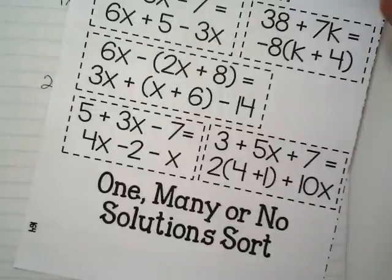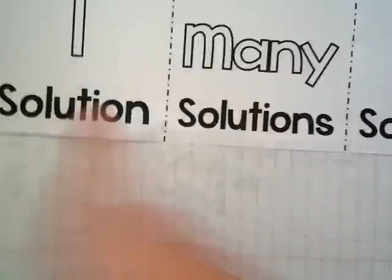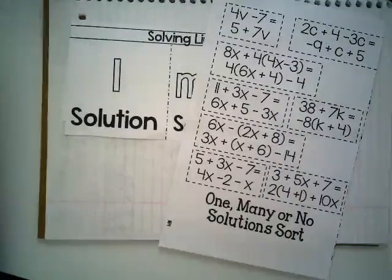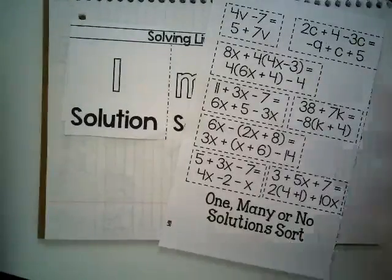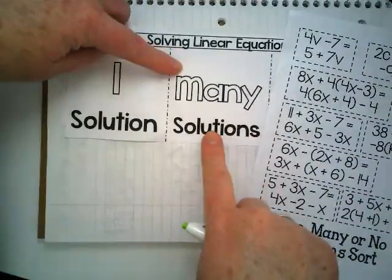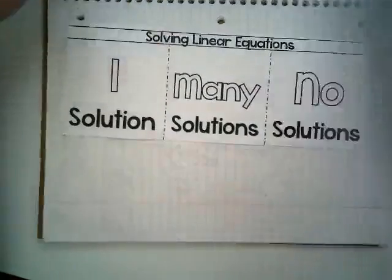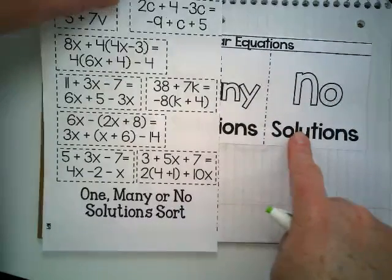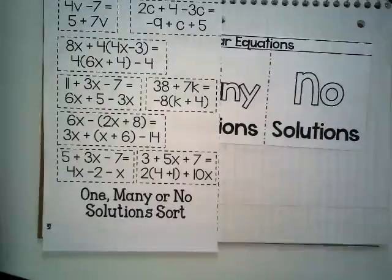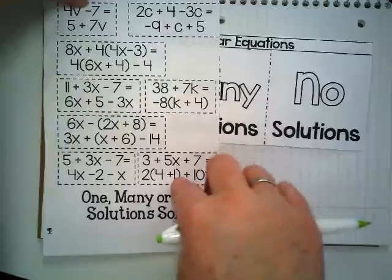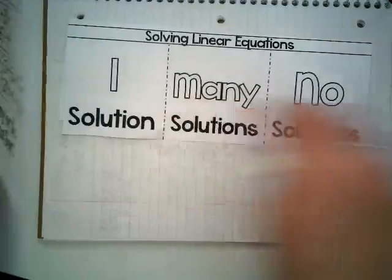And find out. Some of them are going to equal variable equals a number. And those you would glue underneath one solution. If you end up with a number equals the same number, those would go in the many or the infinite or the all real numbers, right? Yes. And then this is if you end up with a number that it says it's equal to another number, which is not true. So you're going to take these 8, solve them, and put them in the right place.